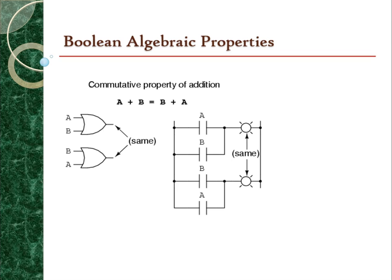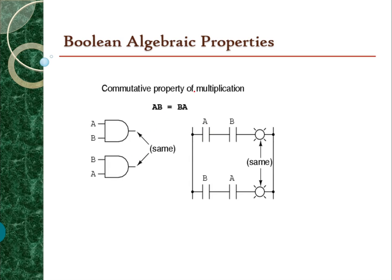Now we move to the Boolean algebra properties. The first property is the commutative property of addition: A plus B is equivalent to B plus A. This can be explained with a circuit — whether you arrange A and B in one order or the other in a parallel circuit, you get the same output. The second commutative property of multiplication states that A multiplied with B is equivalent to B multiplied with A — the same output regardless of arrangement.